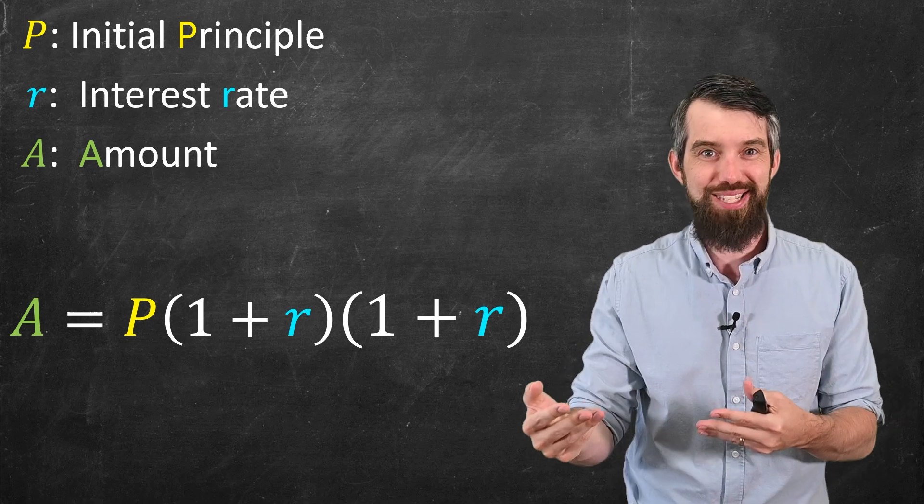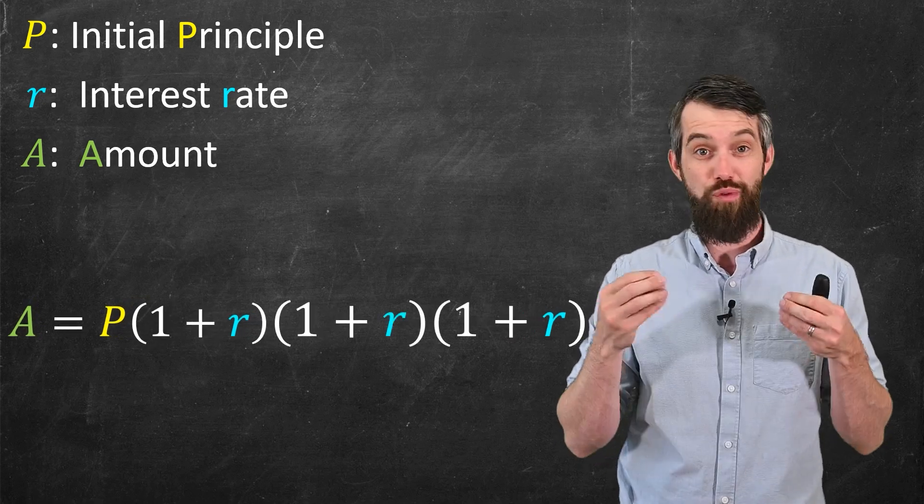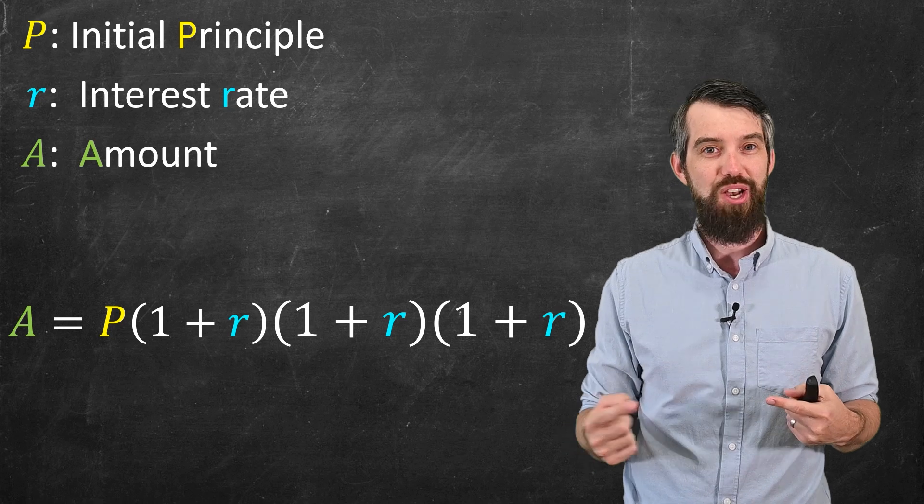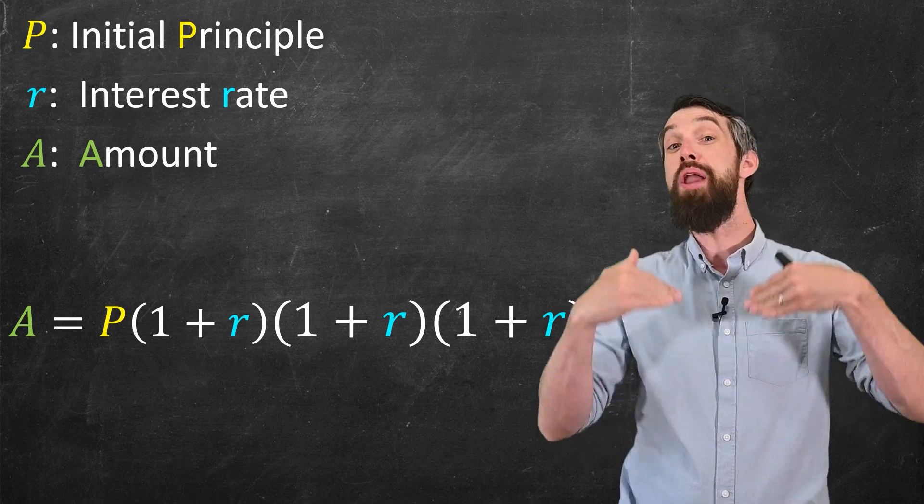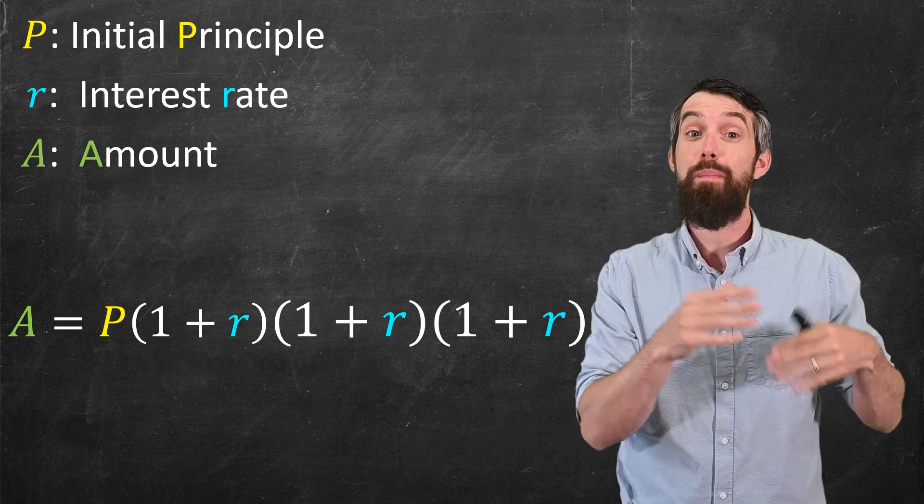In fact, if I keep doing this, for example, if I go three periods, I'm going to have three factors of 1 plus R multiplied to my initial principle. The idea always is, no matter what period you're on, if you go one period further into the future, you just multiply what you previously had by 1 plus R.